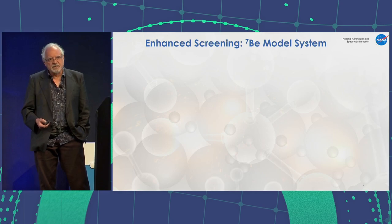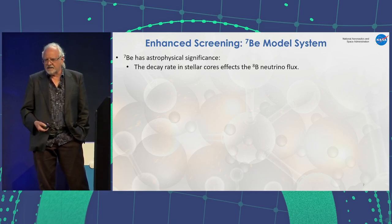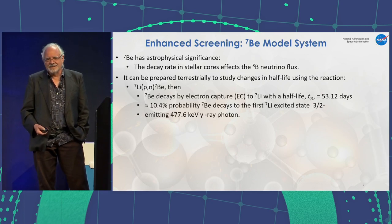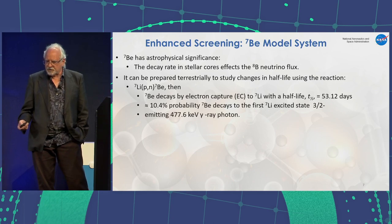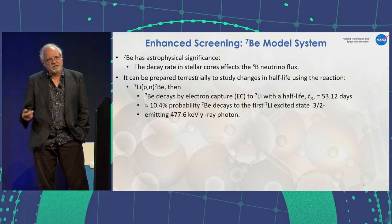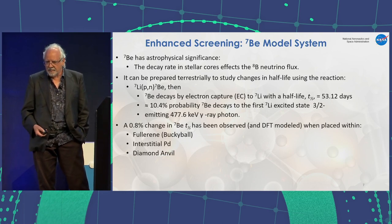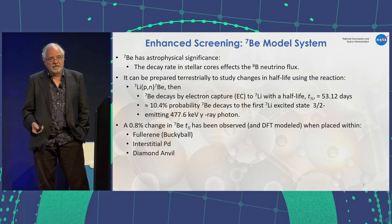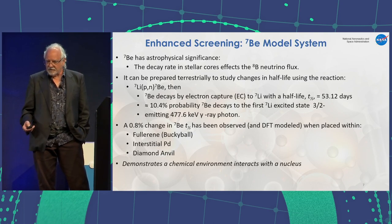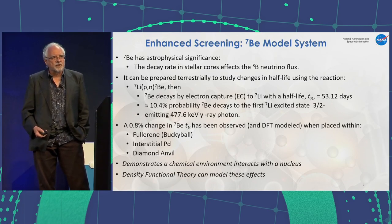Looking at enhanced screening in the Beryllium-7 model system: it has astrophysical significance, as its decay rate in stellar cores affects the neutrino flux we observe on Earth. It can be prepared by the lithium-7 PN reaction, and Beryllium-7 then decays by electron capture. It has a 10.5% probability that the first excited state will emit a 477.6 keV gamma-ray photon, which is easy to observe. What has been consistently observed is a 0.8% reduction in the half-life, modeled with various DFT calculations where it's been put inside a buckyball, fullerene, inside palladium, or using a diamond anvil. This demonstrates that the chemical environment interacts with the nucleus.